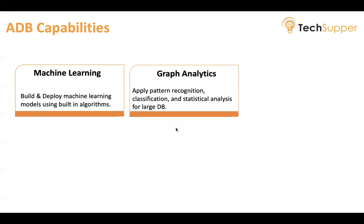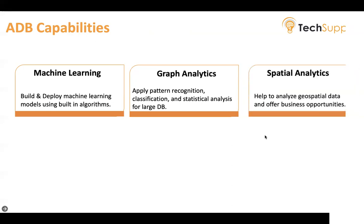Graph analytics: the graph database, part of Oracle's Converged Database offering, eliminates the need to set up a separate database and move data. Analysts and developers can perform fraud detection in banking, find connections and links in data, and improve traceability in smart manufacturing. Spatial analytics: Oracle's spatial database is included in Oracle ADB, allowing developers and analysts to get started easily with location intelligence, analytics, and mapping services. It enables GIS professionals to successfully deploy advanced geospatial applications.